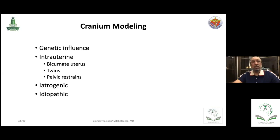These intrauterine factors can produce some abnormal skull shape, which can initially concern the pediatrician when the baby is delivered because the head looks a bit long. Usually we wait two to three weeks and it will be remodeled with time. The iatrogenic type may occur during craniotomy for infants where inappropriate healing of the craniotomy site gives an abnormal head shape. Or if you place a shunt in an infant with a large head and big ventricles, the bones will overlap over time and give a secondary type of craniosynostosis.